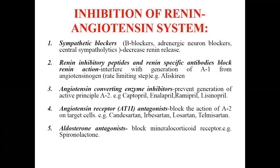Angiotensin receptor 2 antagonists block the action of conversion of angiotensin 2 to angiotensin 3. Examples are candesartan, irbesartan, losartan, and telmisartan. Additionally, aldosterone antagonists — such as spironolactone — block mineralocorticoid receptors and are used to control blood pressure in hypertensive patients.